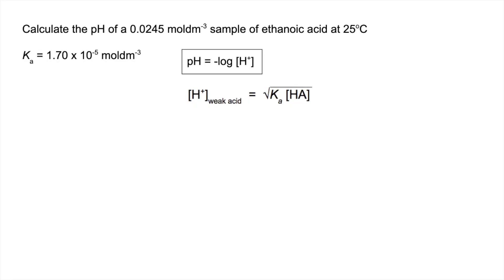We have both of those, so we just plug them straight into the formula. The H+ concentration equals the square root of 1.7 × 10⁻⁵ multiplied by 0.0245. That comes out, and then we minus log that to get a pH of 3.19 to two decimal places.